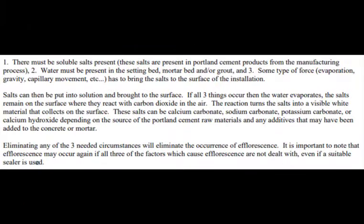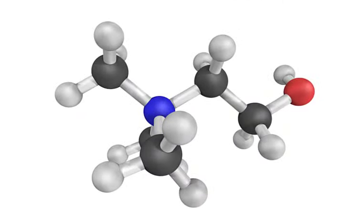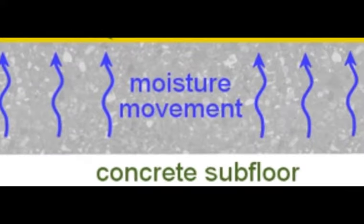The best way to prevent efflorescence is to better understand what it is and how it happens. Essentially three things must occur for efflorescence to become a problem. One, there must be soluble salts present — these are present in Portland cement products from the manufacturing process. Two, water must be present in the setting bed, mortar bed, grout, substrate, and so on. Three, some type of force — evaporation, gravity, or capillary movement — must bring the salts to the surface. The salts are put into solution and brought to the surface, usually by capillary movement.